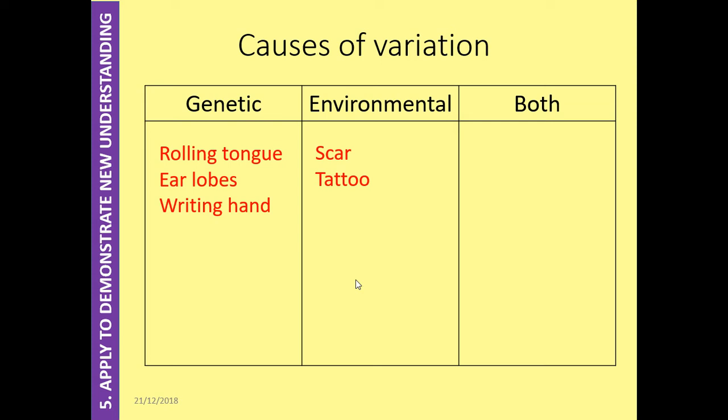A couple of things that we can class as both genetic and environmental are skin colour, because you get your natural skin colour from your parents, but you could get a suntan, spray tan, or go on a sunbed. Hair colour is the same, you get your natural hair colour from your parents, but you could dye your hair, or it could get bleached by the sun.